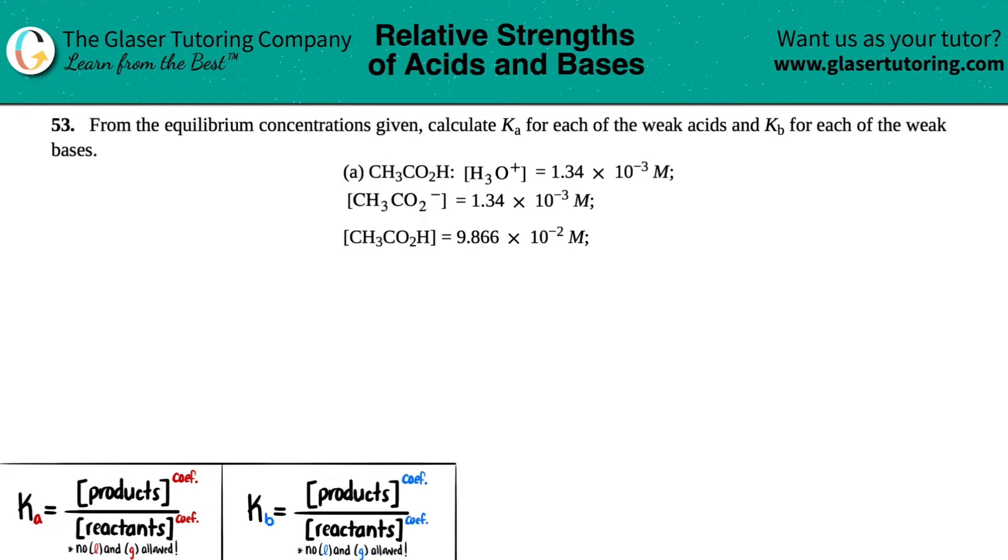Number 53. From the equilibrium concentrations given, calculate the Ka for each of the weak acids and the Kb for each of the weak bases. Okay, and then we have letter A.